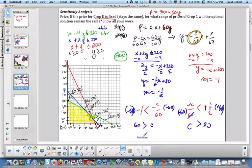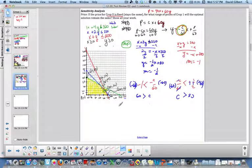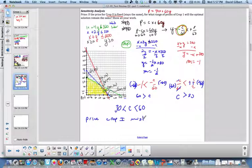What that tells me is that c must be between 30 and 60. And c, you remember, stands for the price of crop 1. So the price of crop 1 must be between 30 and 60. If it's not, that will change our optimum point.